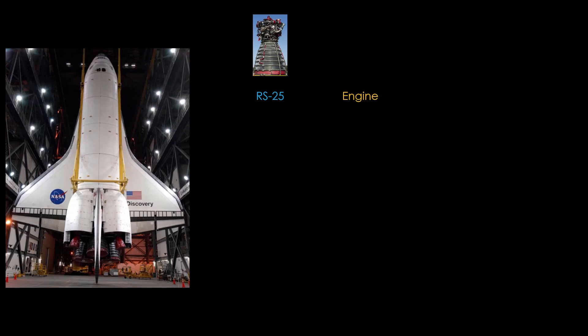The space shuttle uses the RS-25, or space shuttle main engine. Its propellant is liquid hydrogen and oxygen, or hydrolox. Our second stage variant carries 460 tons of propellant.